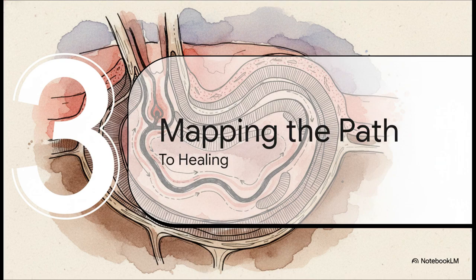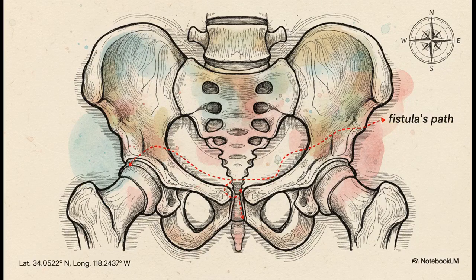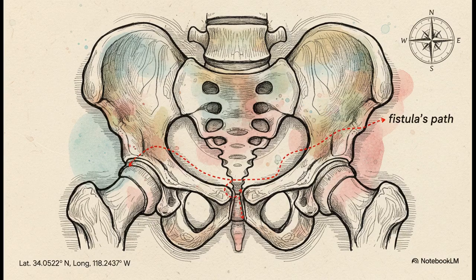Because the path of that tunnel is so important, the very first step in getting this healed is for your surgeon to create a really clear picture of exactly where it goes. Think of it like this: you wouldn't start a cross-country road trip without a map. Your surgeon needs a precise map of the fistula's path to plan the safest and most effective route to healing — that's how they make sure they can protect those all-important gatekeeper muscles.